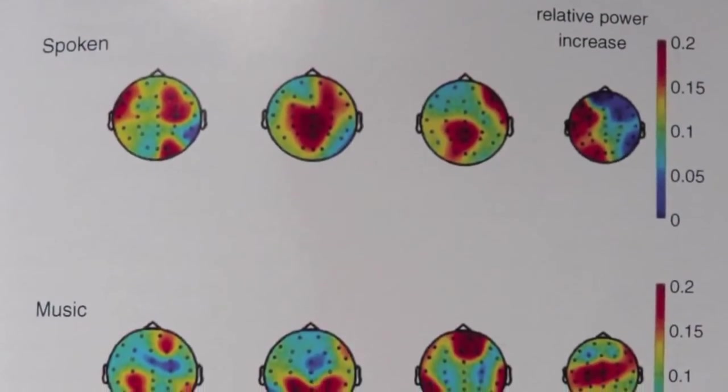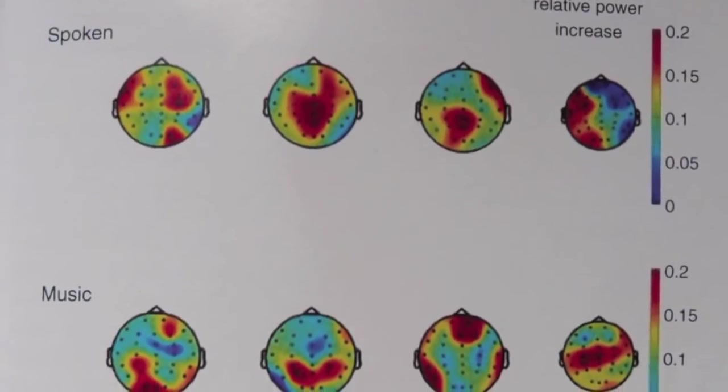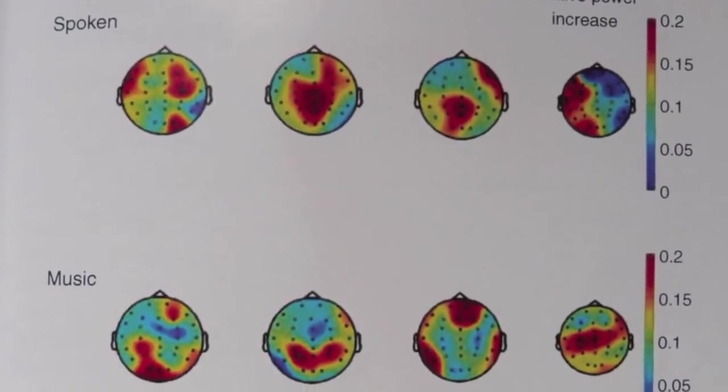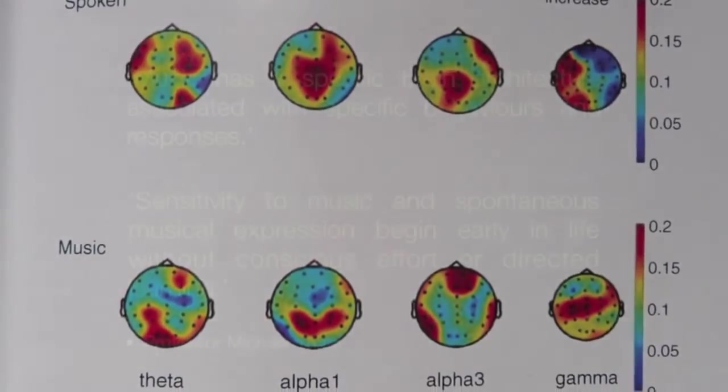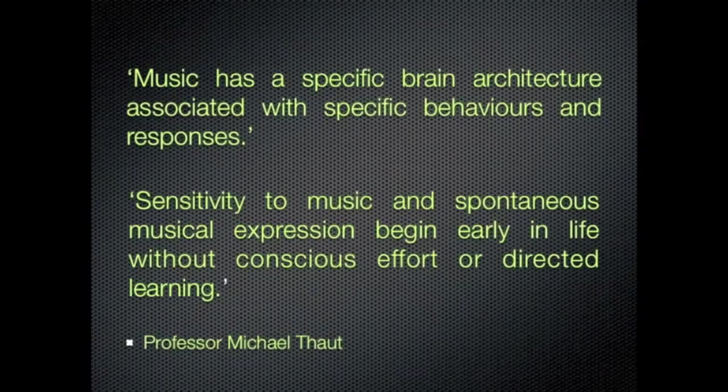As a result of many years of serious study and rigorous research, Professor Michael H. Thort, author of the research paper Rhythm, Music and the Brain, concluded: Music has a specific brain architecture associated with specific behaviours and responses.